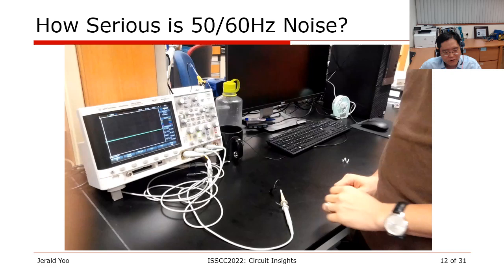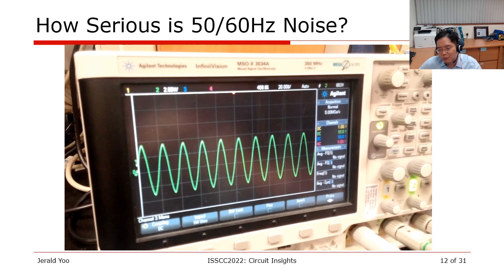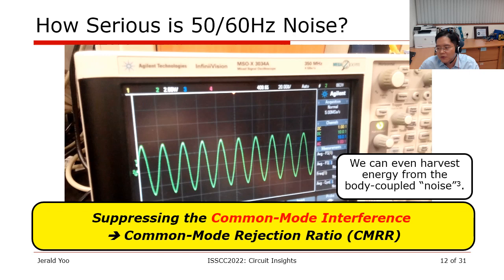I mentioned that 50–60 Hz common mode interference is a big issue in biopotential amplifiers. Here I included an experiment from my lab: I grab the oscilloscope probe with the ground pin floating to replicate a wearable environment. You can see from the oscilloscope screen a nice sine wave of 7-volt peak-to-peak. That's 7 volts, whereas the signal of interest is in the millivolt or microvolt region. This is why we need really high CMRR to suppress the common mode. As a side note, you can even harvest energy from this body-coupled noise because it is so high.